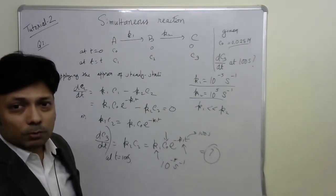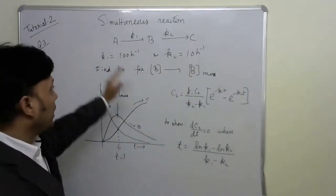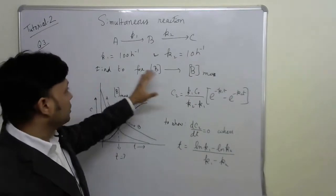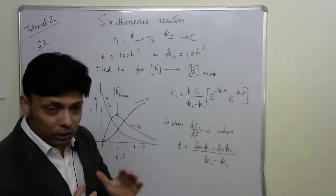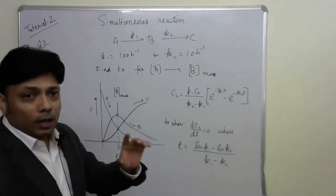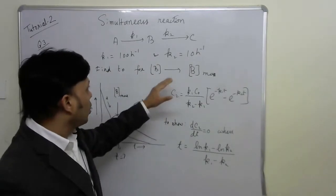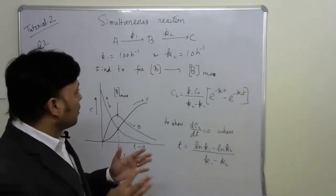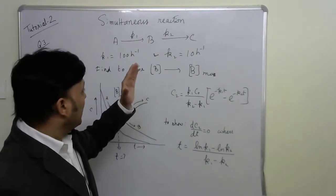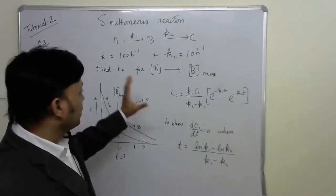Question 3 is another consecutive reaction A→B→C with two rate constants given. From the first look, the rate constants are comparable and we cannot neglect one with respect to the other. The question asks for the maximum concentration of B, which occurs either when K1 much greater than K2 or when K1 and K2 are comparable.